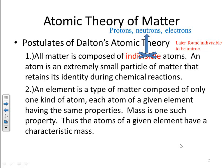Second postulate: an element is a type of matter composed of only one kind of atom, each atom of a given element having the same properties. Mass is one such property; thus the atoms of a given element have a characteristic mass.